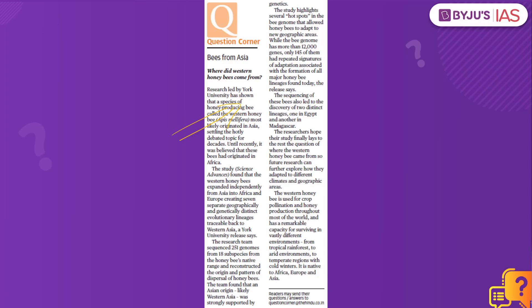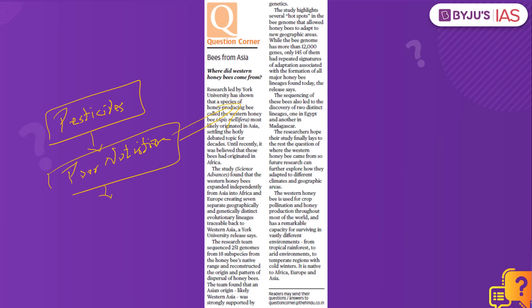What causes colony collapse disorder? There are multiple reasons. The primary cause is the use of pesticides — honeybees get exposed to pesticides applied to crops. Apart from this, poor nutrition is another cause, leading to stress for the honeybees. Stress also results from multiple commercial management practices where bees are constantly transported from one location to another, which can also trigger colony collapse disorder.